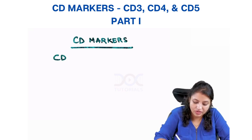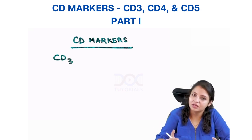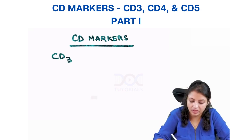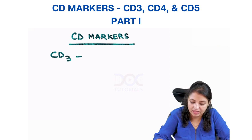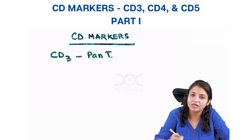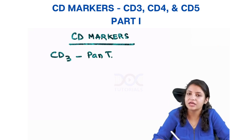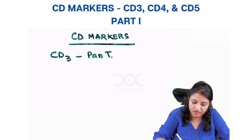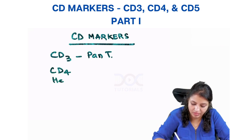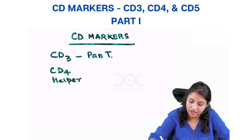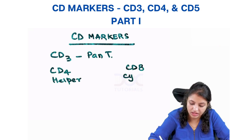Any number less than 9 is a T cell marker. Remember, the pan T cell marker is CD3. We have CD4 cells, also called helper T cells, and CD8, also called cytotoxic T cells.